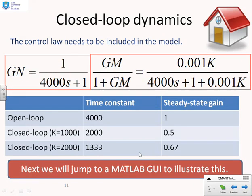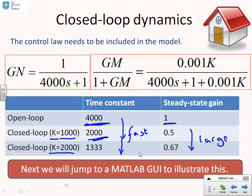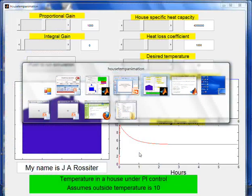So here's the table. You can see if I'm in open loop, the time constant is 4,000, steady state gain is 1. If I close the loop and use capital K is 1,000, the time constant is faster, it's now 2,000. If I use K equals 2,000, the time constant is faster again, it's now 1,300. Similarly, if I look at the closed-loop steady state gains, it's 0.5 with K equals 1,000 and 0.67 with K equals 2,000. So the steady state gain is getting larger. So again, let's look at some simulations and see if this is indeed what we expect.